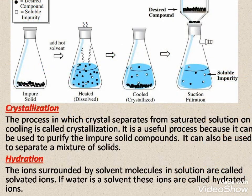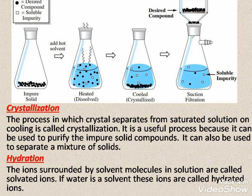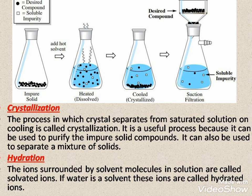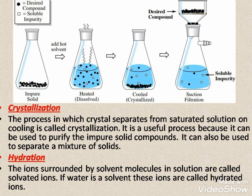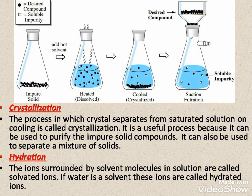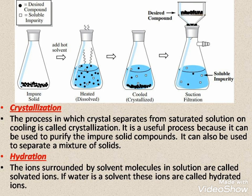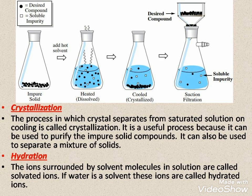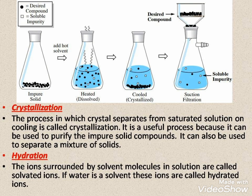Let us now discuss two important terms: crystallization and hydration. Crystallization is a process by which crystals are separated out from a saturated solution. When a saturated solution is cooled down, the crystals of the salts which have water of crystallization settle down at the base, and this can be used as a method of separation. Hydration refers to ions surrounded by solvent molecules in a solution, called solvated ions. If water is the solvent, then the ions dissolved in it are called hydrated ions.